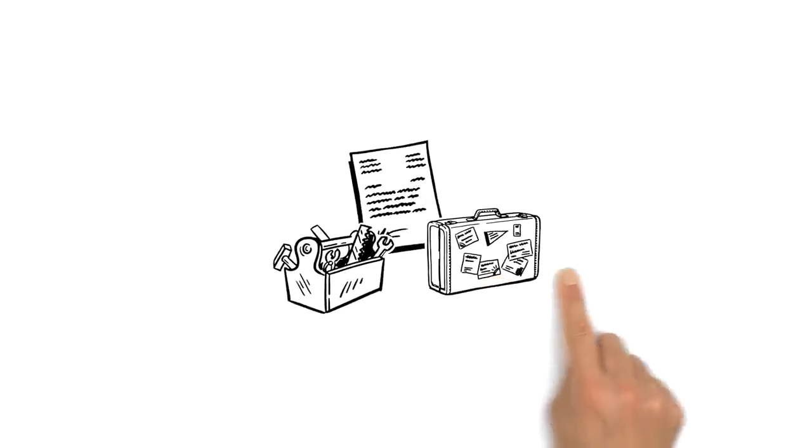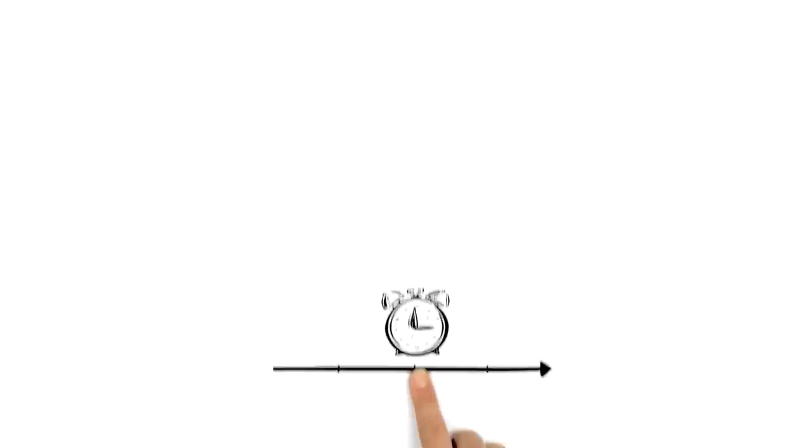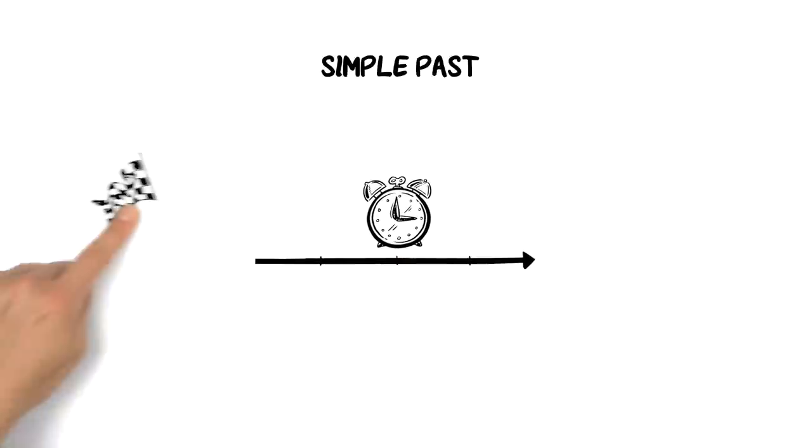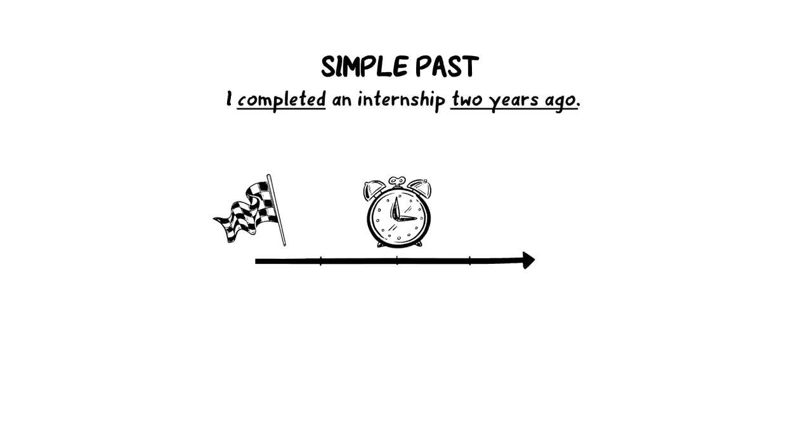The content should provide two or three solid examples of your skills and experience. But watch your English tenses. Use simple past for events finished in the past and saying when exactly. For example, I completed an internship two years ago.